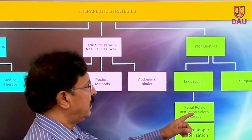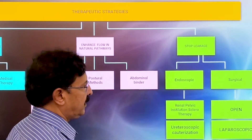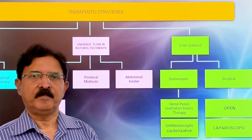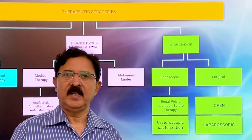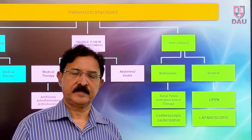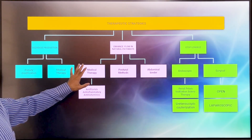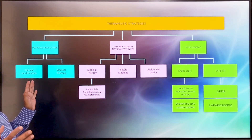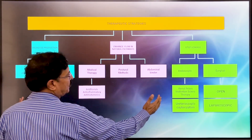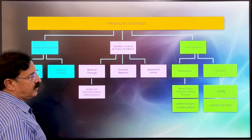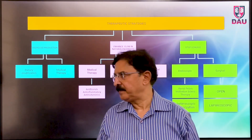One can also use surgical methods to interrupt these fistulae, either by open surgery — called pyelolymphatic disconnection — or the same can be done laparoscopically or even robotically. These first two approaches are called conservative methods and are the focus of this video.